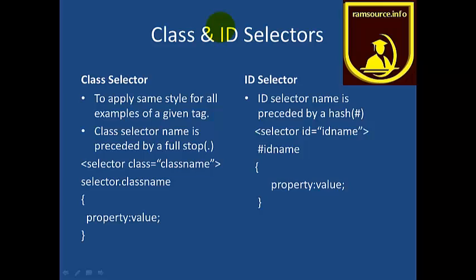Next is Class and ID Selectors. If you look at Object-Oriented Programming, you have a class name. That's the concept used in CSS. We tag in HTML and we select it in CSS using a selector. In the selector, there is an Attributes class — there is a class name. The selector uses a dot followed by the class name, then the property and value. That is a class selector.